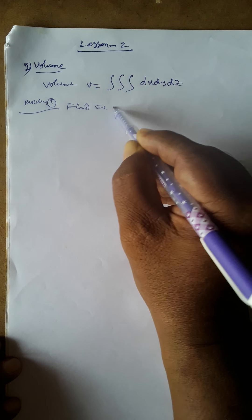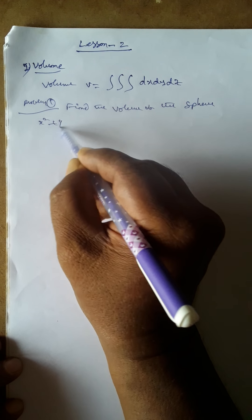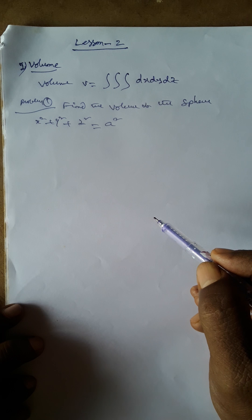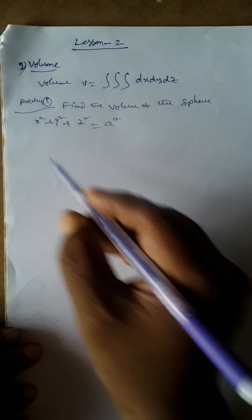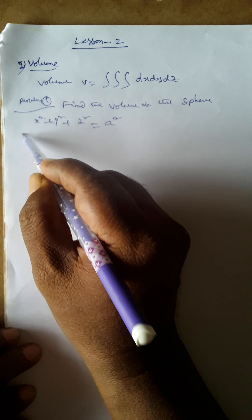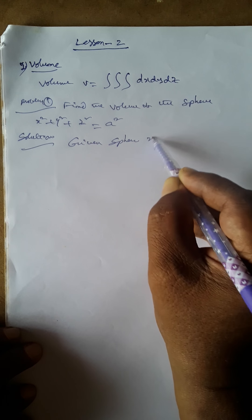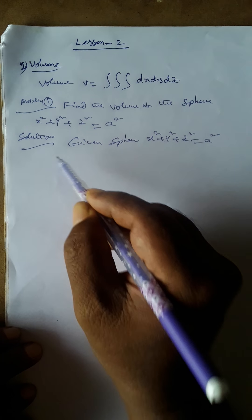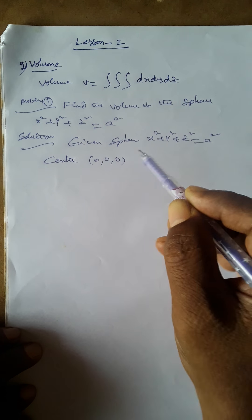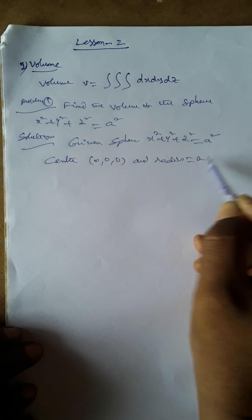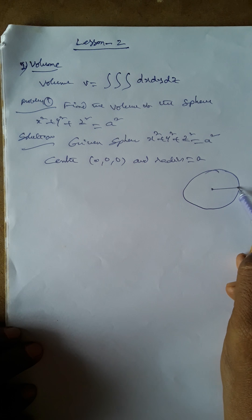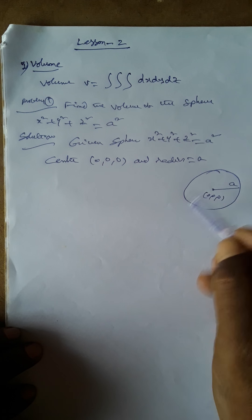Problem one: Find the volume of the sphere x² + y² + z² = a². The center is at (0, 0, 0) and the radius is a. This is the diagram of the sphere and we have to find its volume.